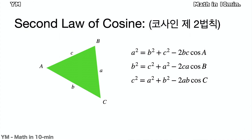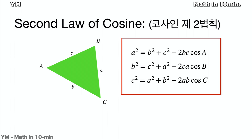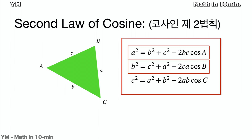The next is the second law of cosine. This is actually used more than the first law of cosine. Its theorems are: A squared equals B squared plus C squared minus 2BC cosine A; B squared equals C squared plus A squared minus 2CA cosine B; and C squared equals A squared plus B squared minus 2AB cosine C.